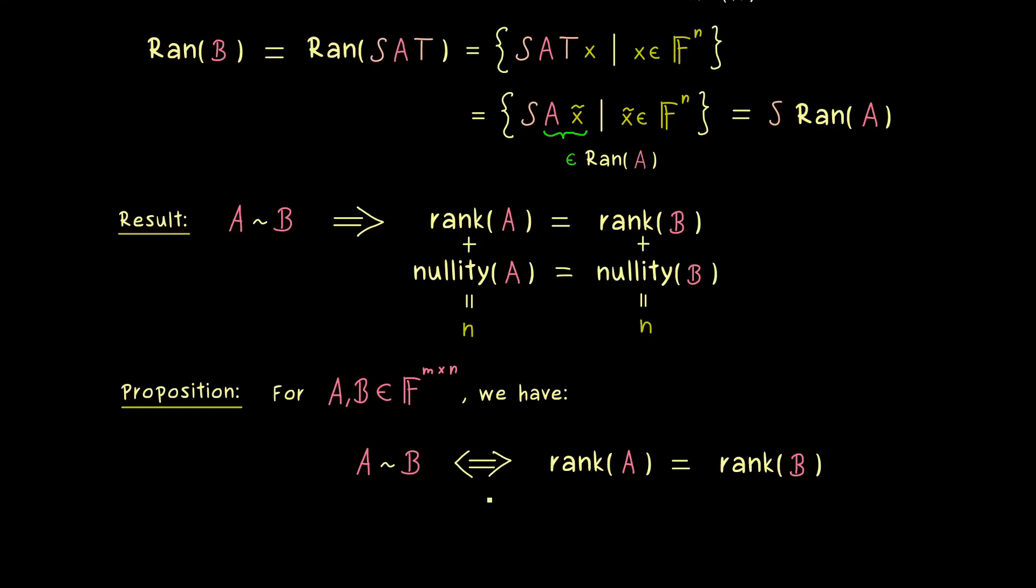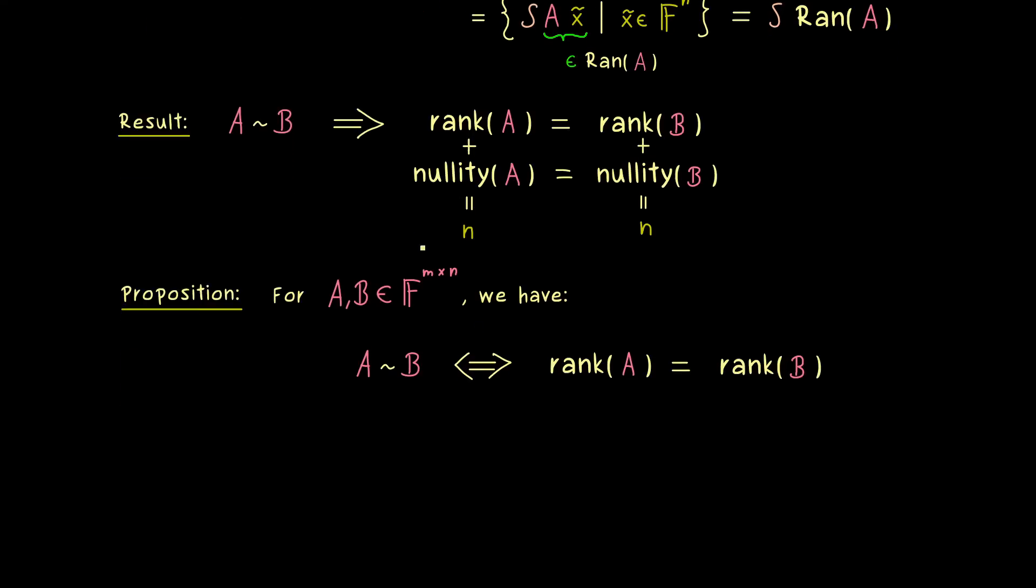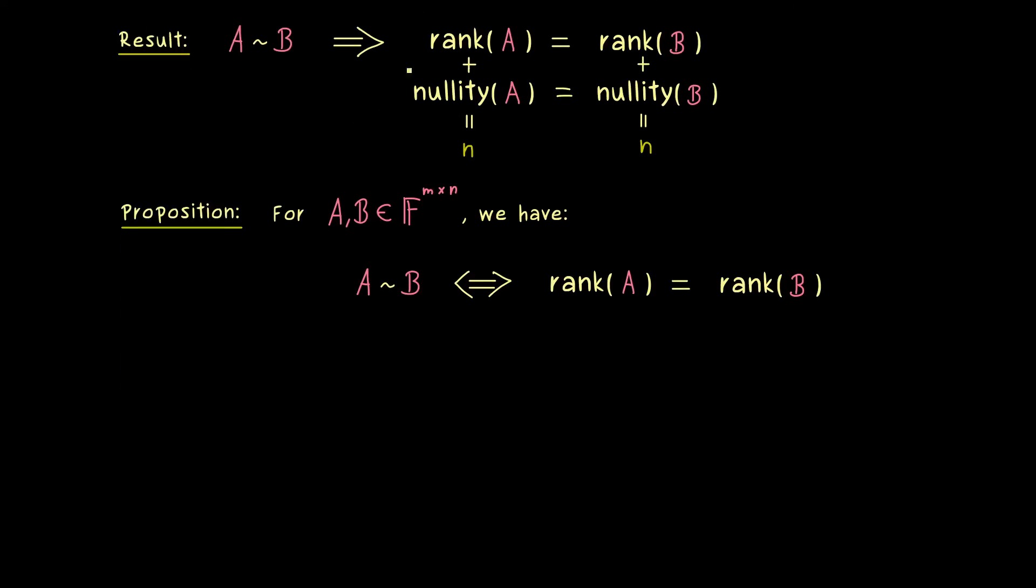And indeed the proof here is not so hard, because we only have to write down one implication anyway. And moreover, we already know how we can transform matrices with the Gaussian elimination. And in the whole process of the Gaussian elimination, we only multiply with invertible matrices. In other words, what we get out is still equivalent to our original matrix.